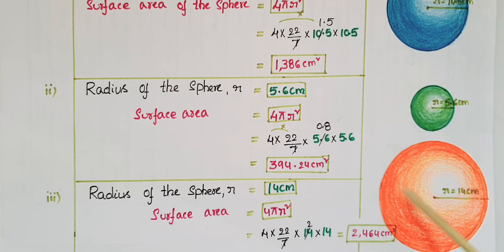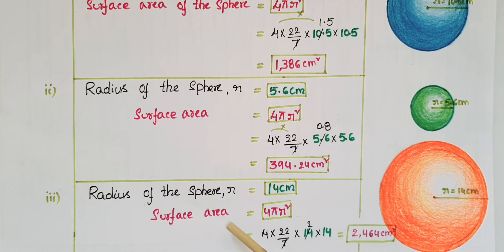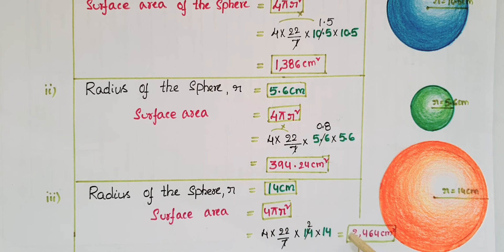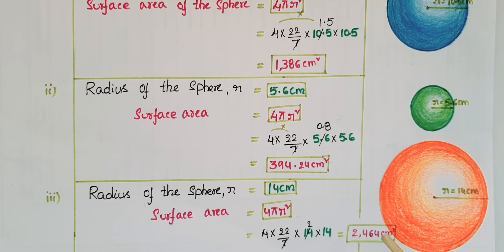For the third one, the radius of the sphere is r = 14 centimeters. The surface area is 4πr², that is 4 × (22/7) × 14 × 14, which equals 2464 centimeters square.